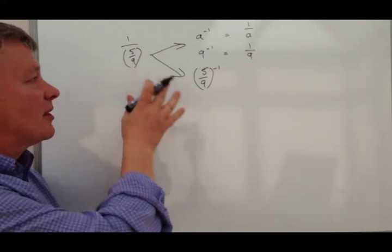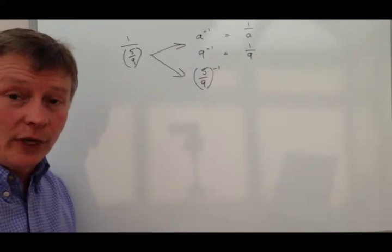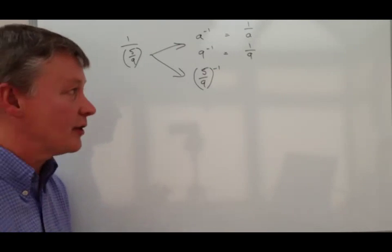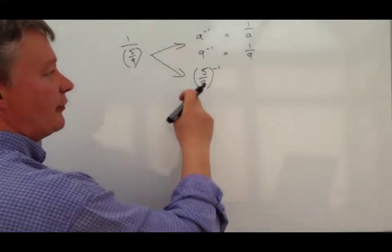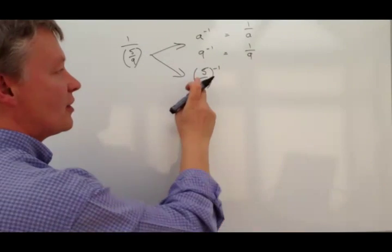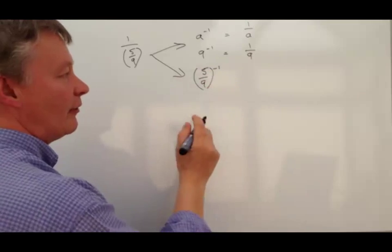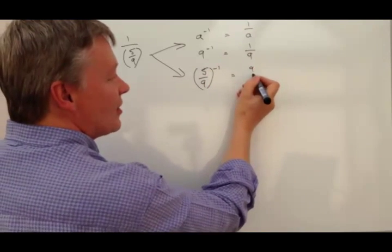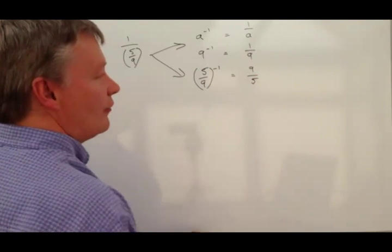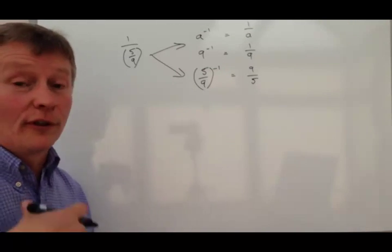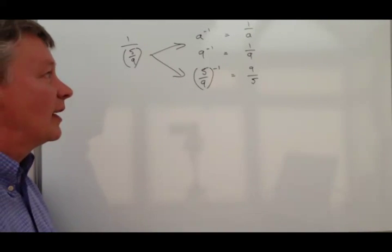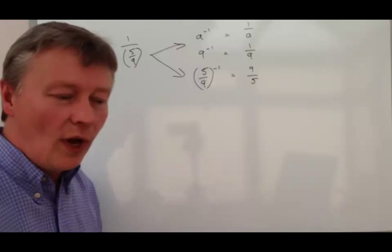Practically, in order to solve this, it's very similar to the way that you might actually divide fractions. What you actually do is you flip this the other way around. So 5 over 9 to the power of minus 1 actually is the same as 9 over 5. It's the reciprocal or the flip around the other way.